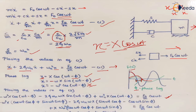We apply trigonometric identities to expand the expressions: cos(ωt − φ) = cos(ωt)cos(φ) + sin(ωt)sin(φ), and sin(ωt − φ) = sin(ωt)cos(φ) − cos(ωt)sin(φ). The right-hand side remains F₀/m·cos(ωt).